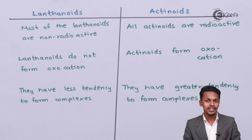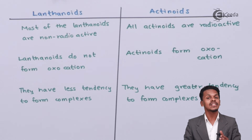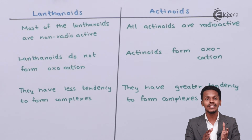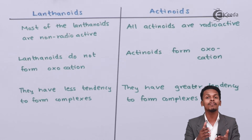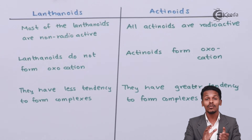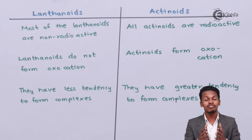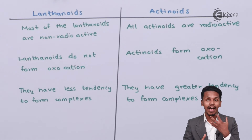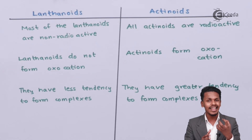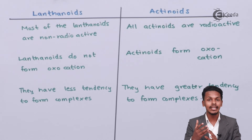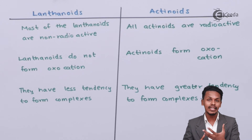Talking about oxidation states, lanthanoids have variable oxidation states ranging from +2 to +4, with +3 as the common oxidation state. Actinoids have variable oxidation states ranging from +2 to +7. As a result, the ions of lanthanoids are less colored, while the ions of actinoids are heavily colored.